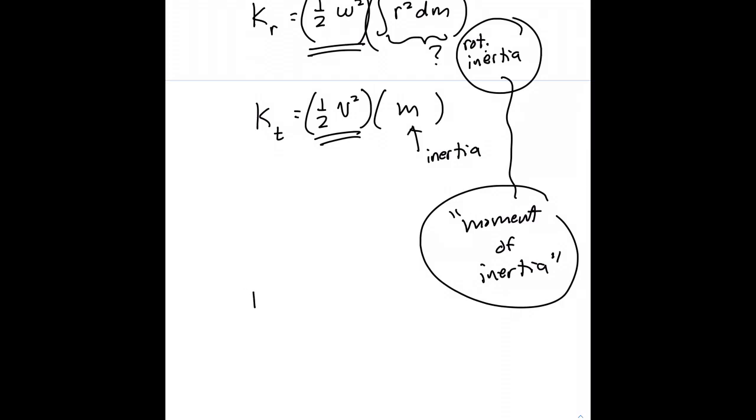In fact, we'll define a variable for this. We'll say capital I represents rotational inertia, and we'll define it to be equal to the integral of r squared dm.